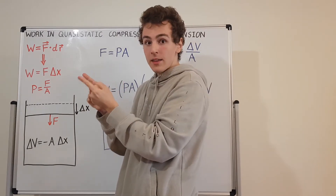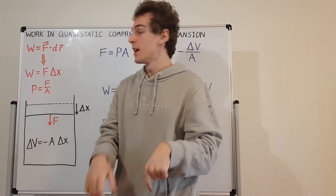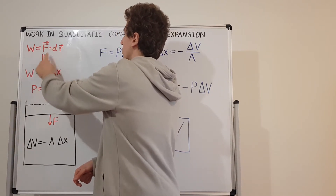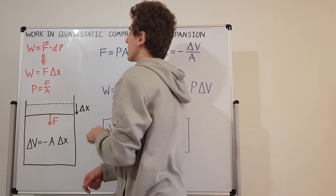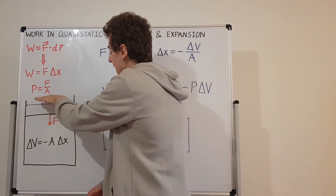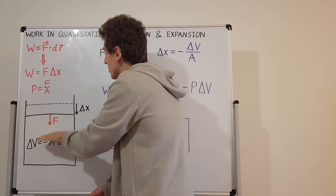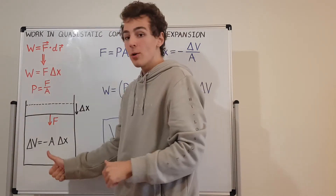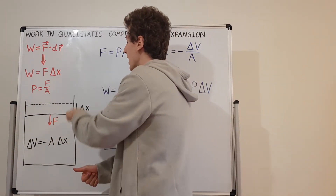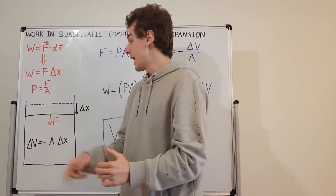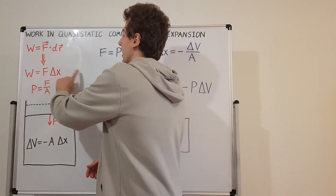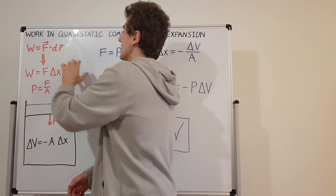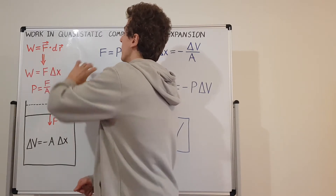If those two vectors are parallel, then the dot product is the same as the magnitudes multiplied together. That's what we have here — f times delta x, which are the magnitudes of the force f and the tiny displacement dr. In the piston diagram, if the piston moves down or up, that is the same direction as the force being applied. The force is either applied downward or the gas applies a force upward, and that is parallel to the direction of delta x. So the dot product of the force and displacement gives us the work — a scalar quantity.